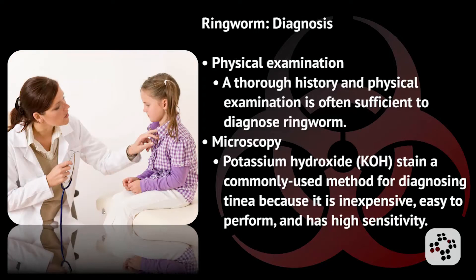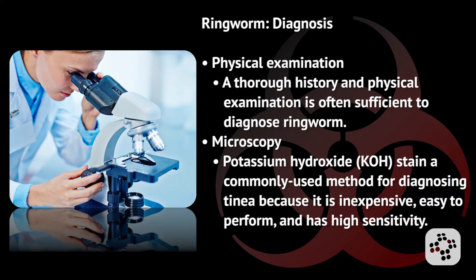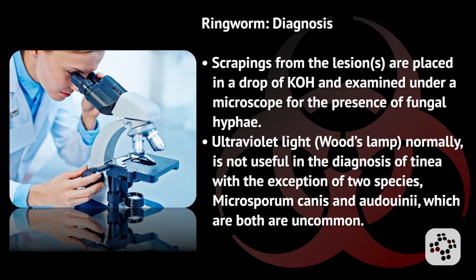Ringworm is diagnosed through a physical examination. A thorough history and physical examination is often sufficient to diagnose ringworm. Microscopy using a potassium hydroxide (KOH) stain is a commonly used method for diagnosing tinea because it is inexpensive, easy to perform, and has high sensitivity. Scrapings from the lesions are placed in a drop of KOH and examined under a microscope for the presence of fungal hyphae.